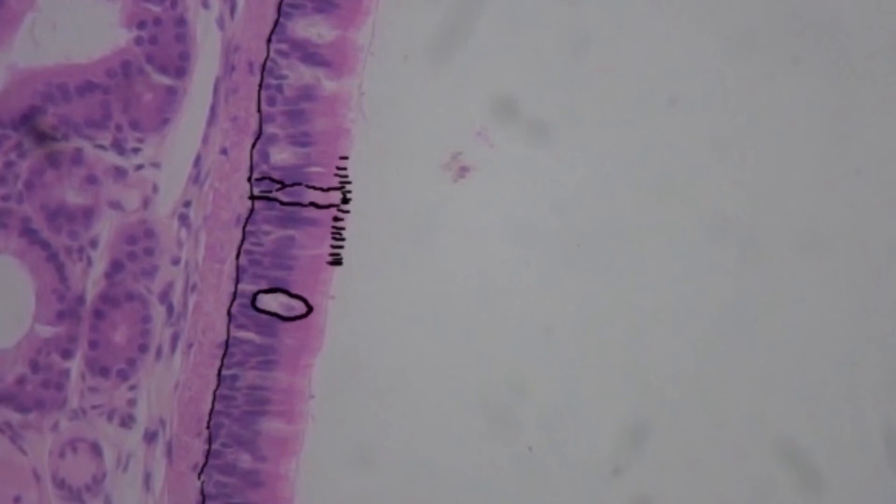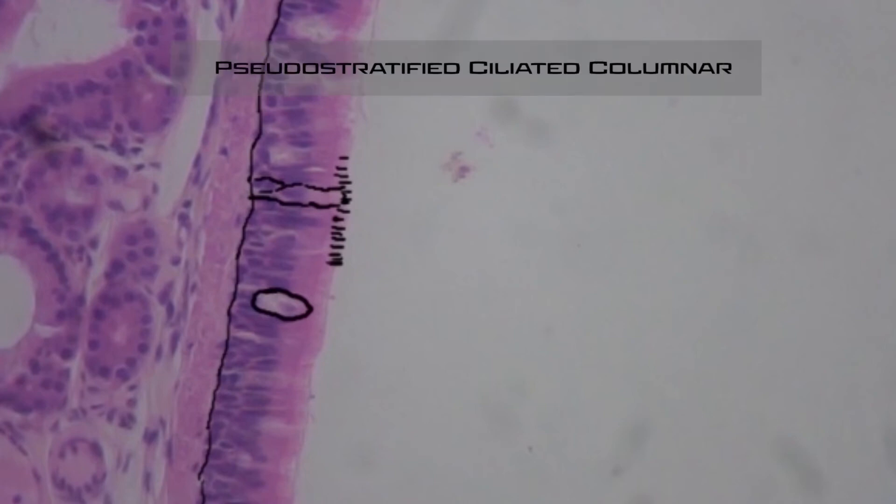Also here, you can see goblet cells, which release mucus to help move things we breathe in out of our lungs and trachea. We also see cilia on top of the cells — little hair-like projections — which move all the mucus upwards, getting rid of dirt or bacteria we breathe in using the cilia and the mucus created by the goblet cells. The majority of these pseudostratified cells are columnar, so we have a very special name for this type: pseudostratified ciliated columnar cells — pseudostratified because they look stratified but aren't, ciliated because they have cilia, and the majority are columnar in shape.